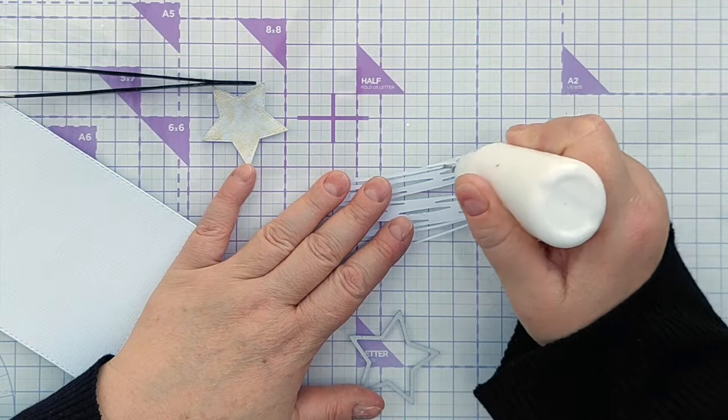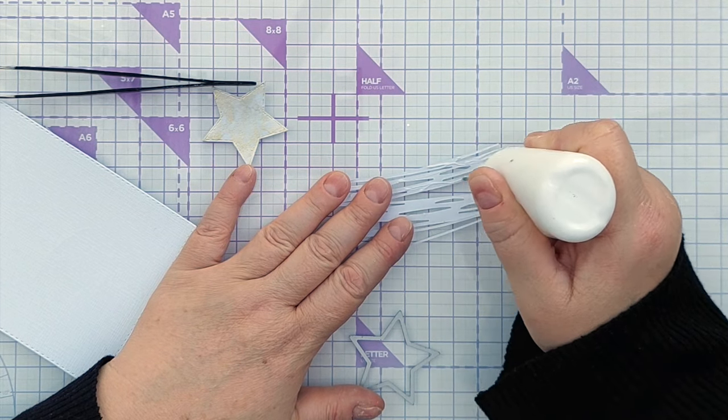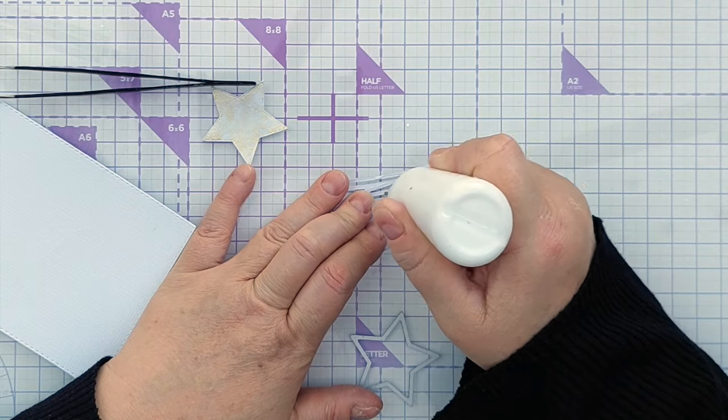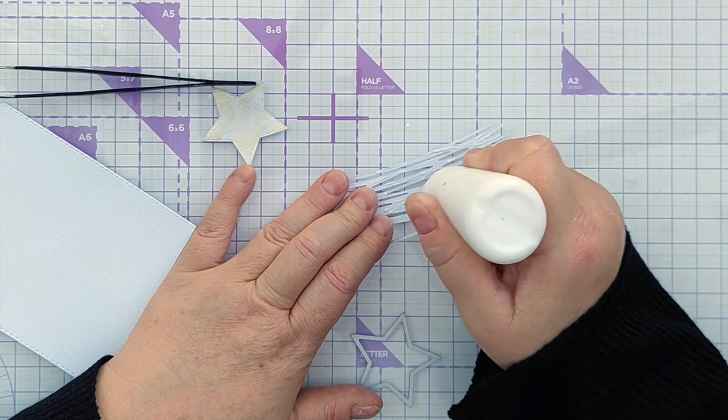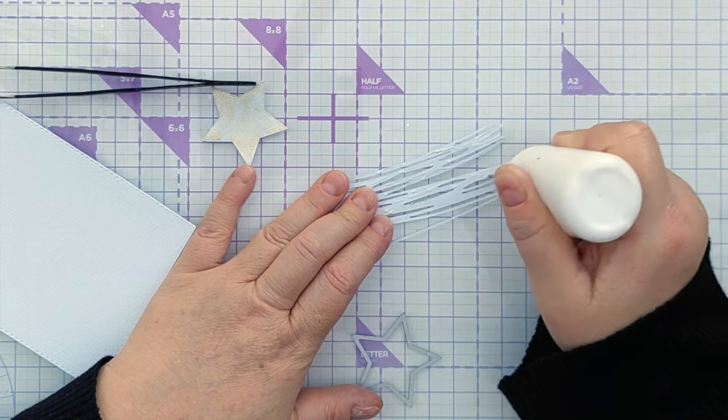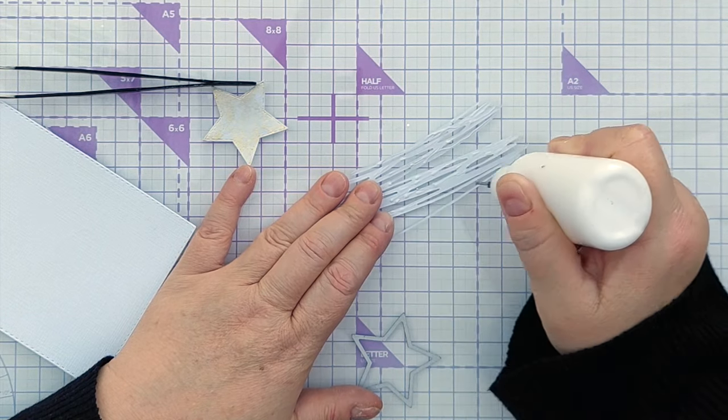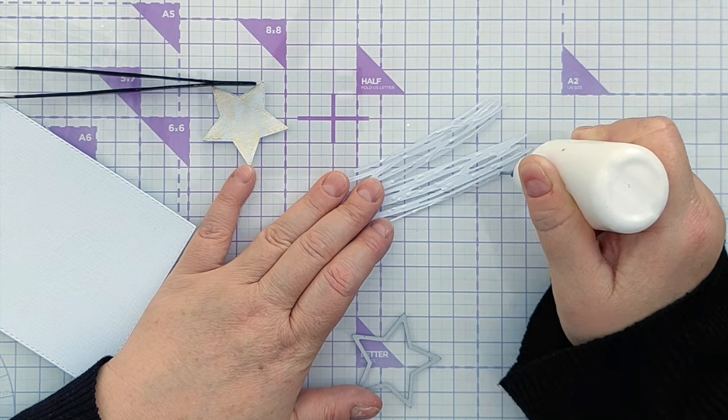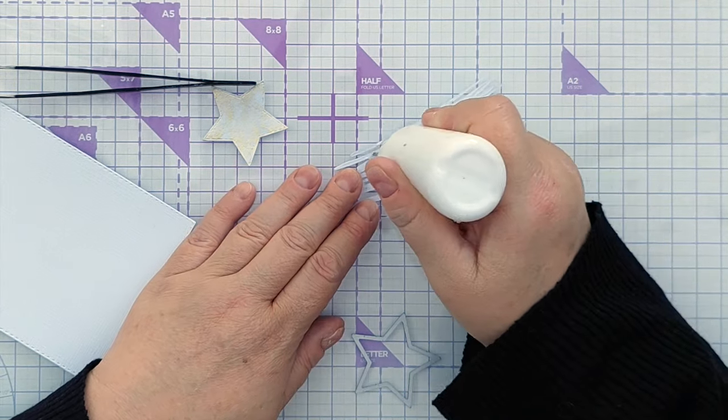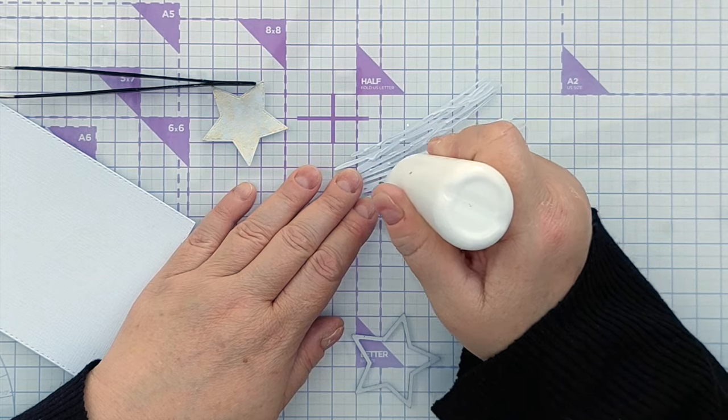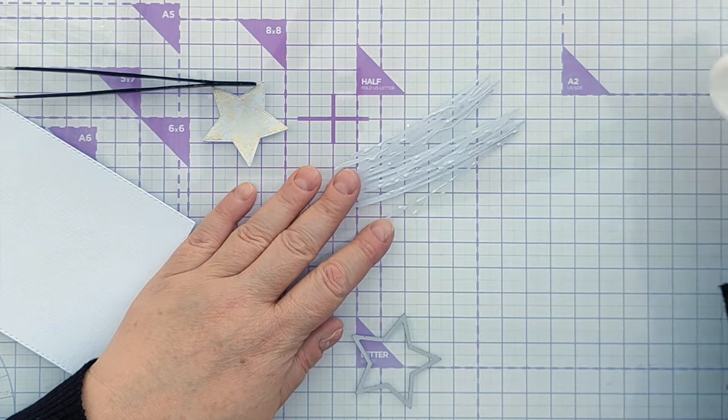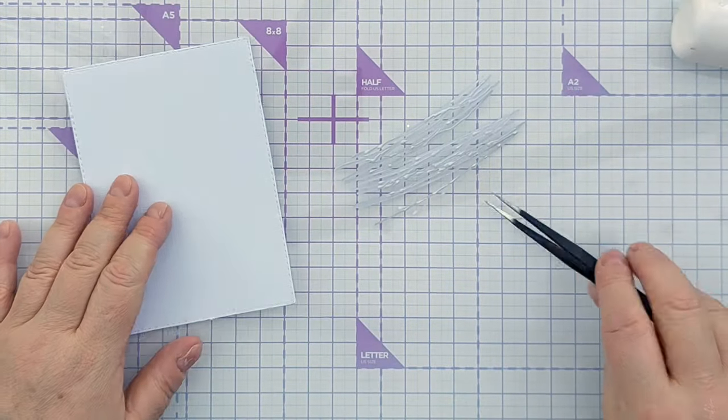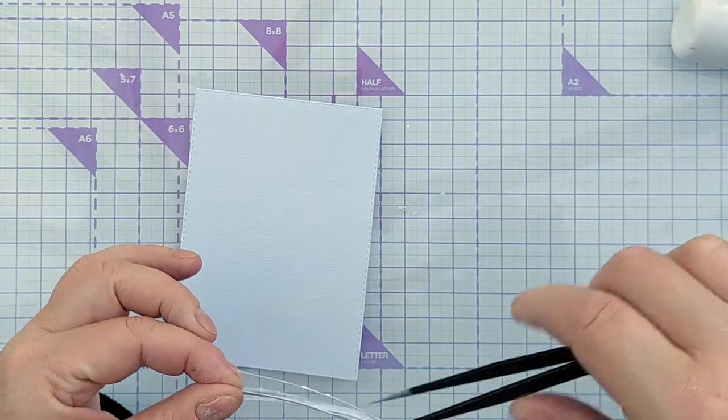Once everything was dry it was time to assemble the card so I used Matte Gel Medium to glue the scribble die down to a rectangular stitched panel of linen textured cardstock. I used Matte Gel Medium for this because I knew some of the glue was probably going to splurge out of the sides and I didn't want it to show. Matte Gel Medium dries clear but it also dries matte so you don't get any glossy smears if glue does seep out from under your die cut.